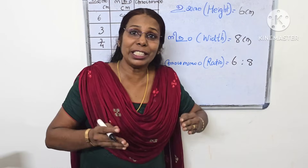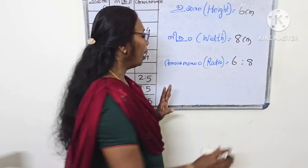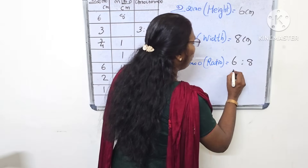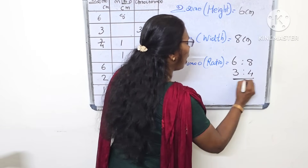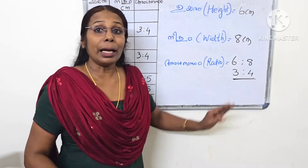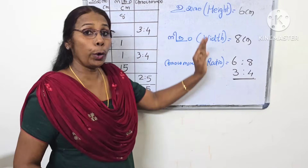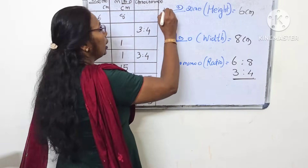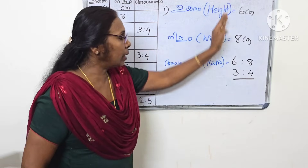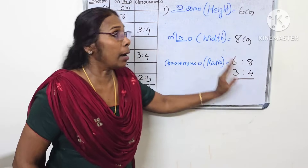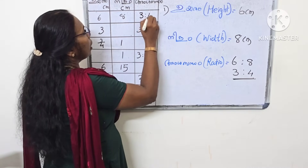Then we work with natural numbers. It comes out to 3 to 4. We do that simplification. If you want to do it, you'll need to simplify. The answer is 3 to 4.